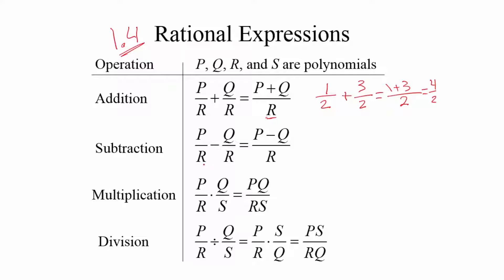If you were subtracting two rational expressions, the common denominator is again R, and you subtract the numerators. As a numerical example with real numbers: 3 half minus 1 half. Since the denominator is the same, you write one denominator and it would be 3 minus 1, which is 2 divided by 2, which equals 1.